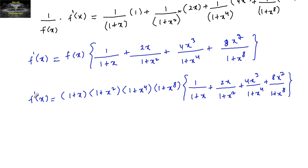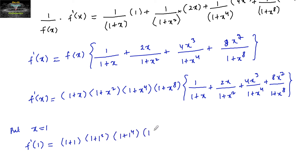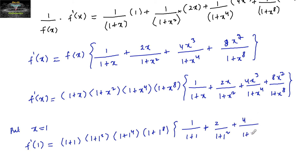This is f'(x). Now let us find f'(1) by putting x=1. So f'(1) = (1+1)(1+1²)(1+1⁴)(1+1⁸) × [1/(1+1) + 2/(1+1²) + 4/(1+1⁴) + 8/(1+1⁸)].